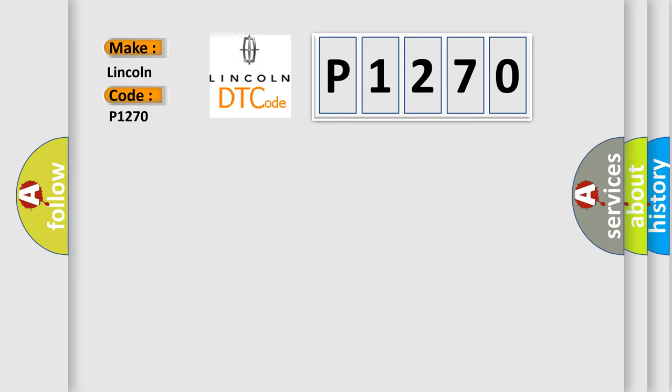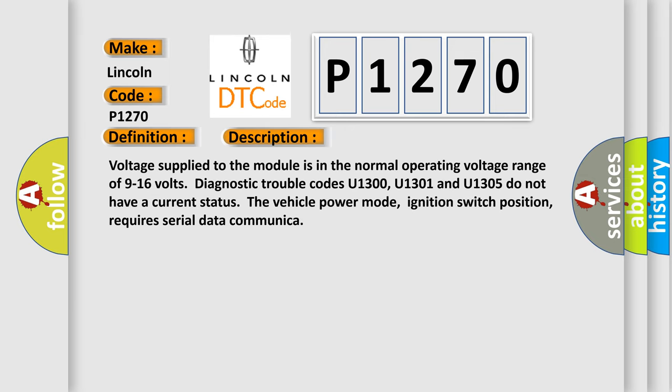The basic definition is Lost communication with transmission control module. And now this is a short description of this DTC code. Voltage supplied to the module is in the normal operating voltage range of 9 to 16 volts. Diagnostic trouble codes U1300, U1301 and U1305 do not have a current status. Notice the vehicle power mode, ignition switch position, requires serial data communication.